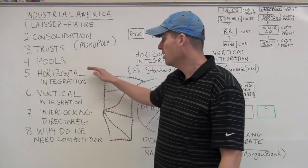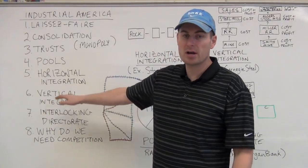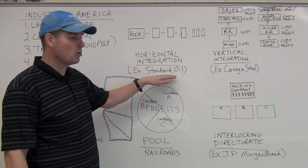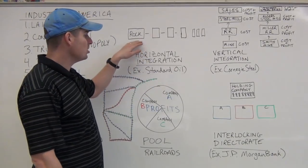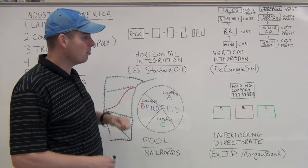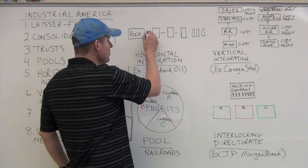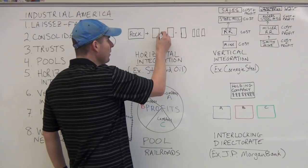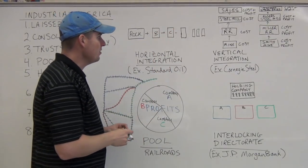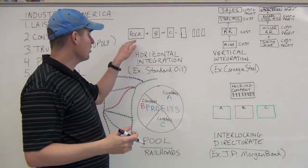That's a pool. The next thing we have is horizontal integration. Horizontal integration is essentially—we're going to use the example of Standard Oil with John Rockefeller. You have a company that's maybe a little bit bigger, and they are going to come into an agreement to join a couple of other companies, B and C.